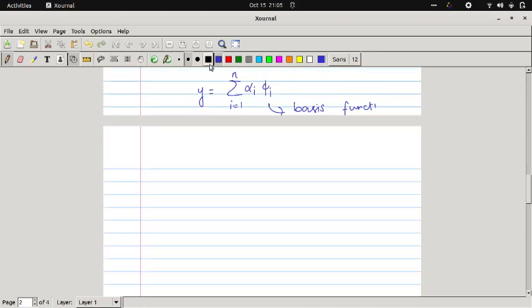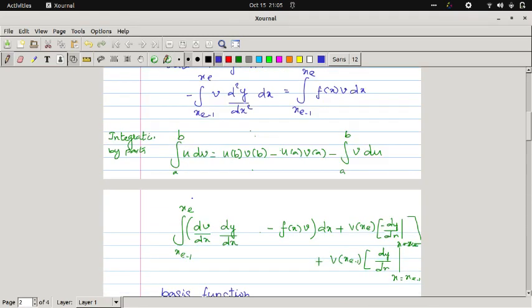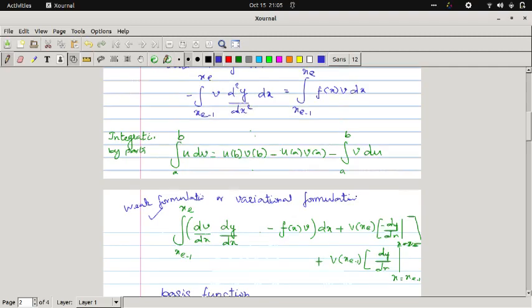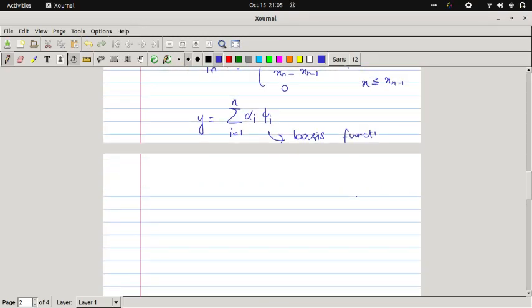Now I will write our weak formulation. We already see this is the weak formulation, also known as variational formulation. So for weak formulation we take v equal to phi_j of x. We take phi_j of x.